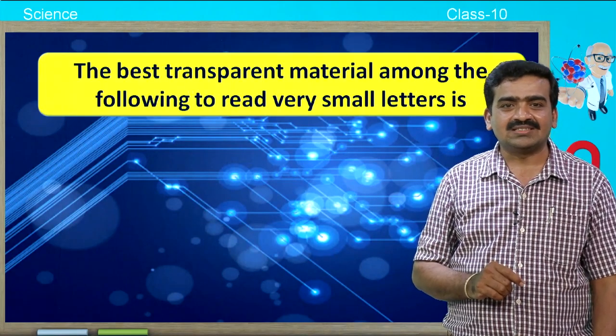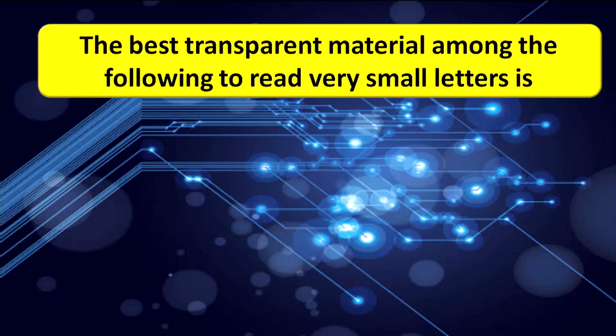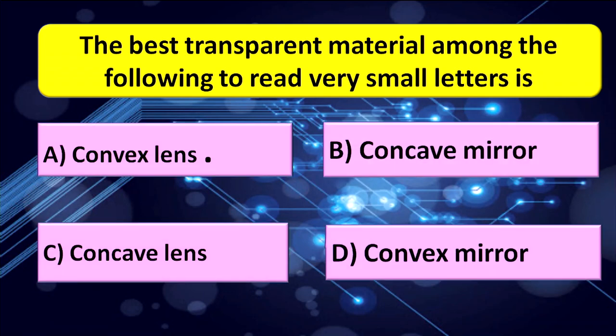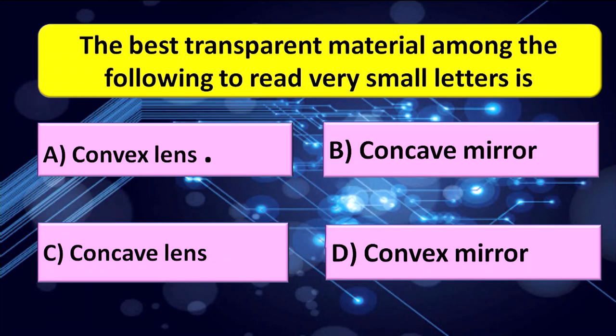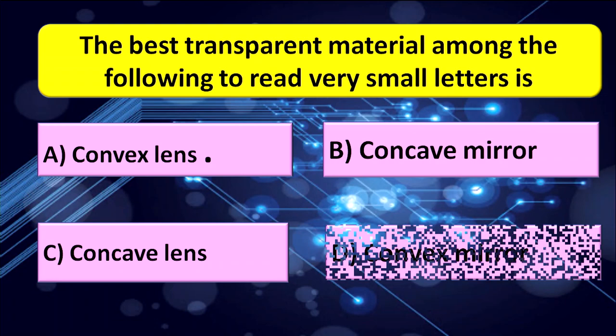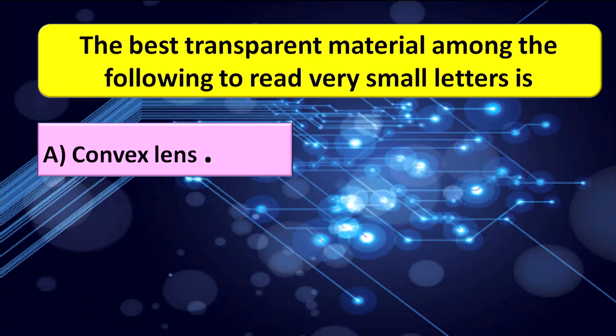The next question: the best transparent material among the following to read a very small letter is — a) convex lens, b) concave mirror, c) convex lens, d) convex mirror. The answer is a) convex lens.